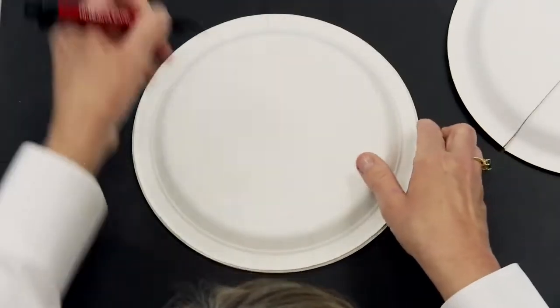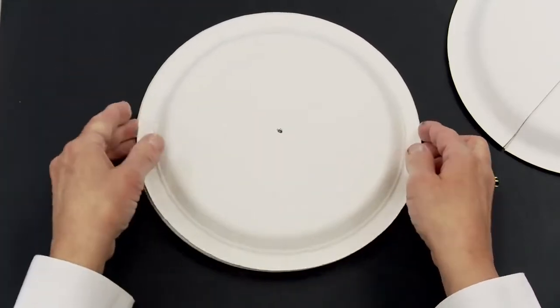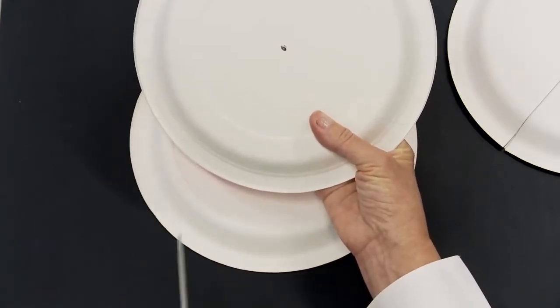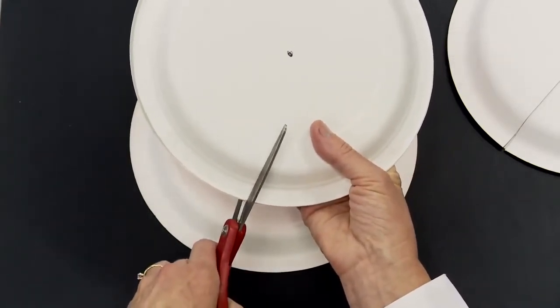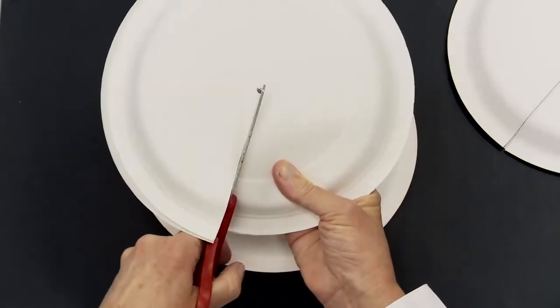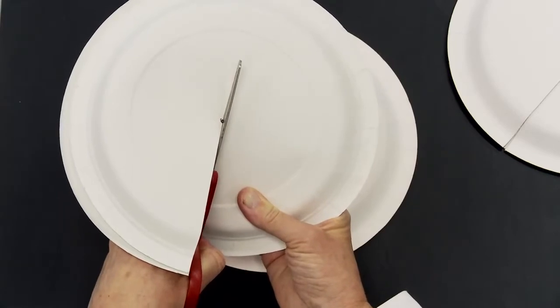They're going to repeat that on the remaining plates. And usually two plates at a time is about as many as you can cut. So they're going to cut along a radius from the circumference just past that center point of the circle.